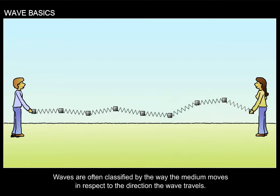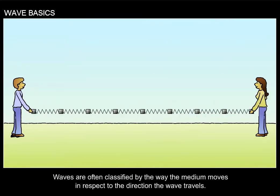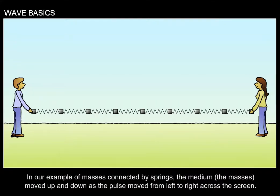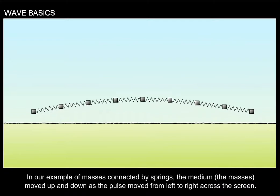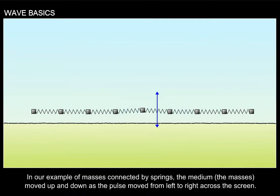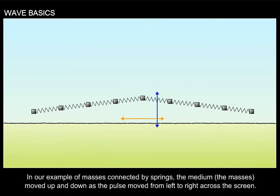Waves are often classified by the way the medium moves in respect to the direction the wave travels. In our example of masses connected by springs, the medium, the masses, moved up and down as the pulse moved from left to right across the screen.